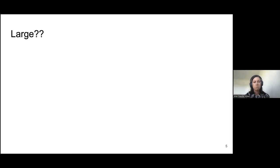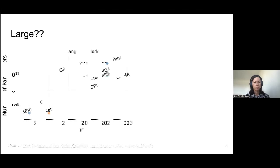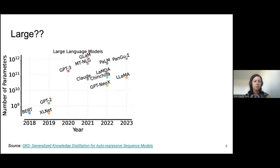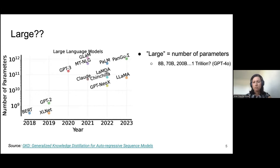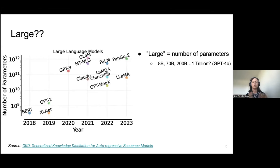What do we mean when we say 'large' language model? We can look at the evolution of language models over time, starting with what we would now consider smaller language models like BERT, and we can see a very high growth in the number of parameters. We consider, at least as of now, that there is a direct correlation between the number of parameters and the ability of these models to learn.